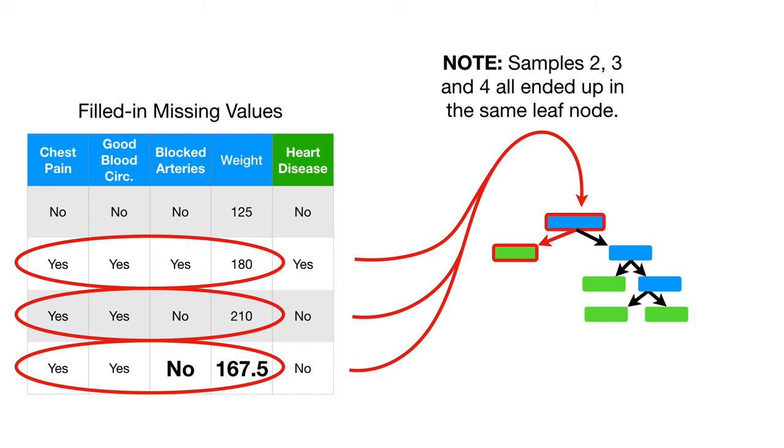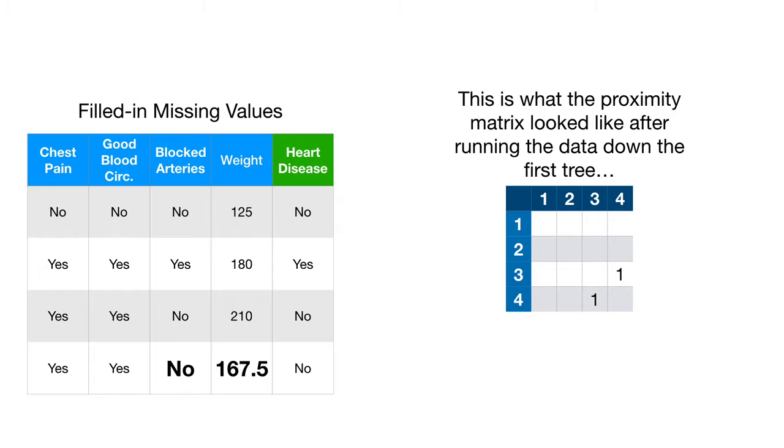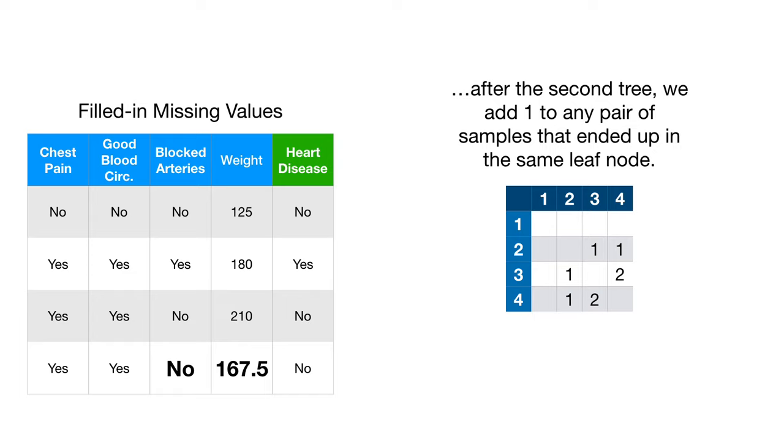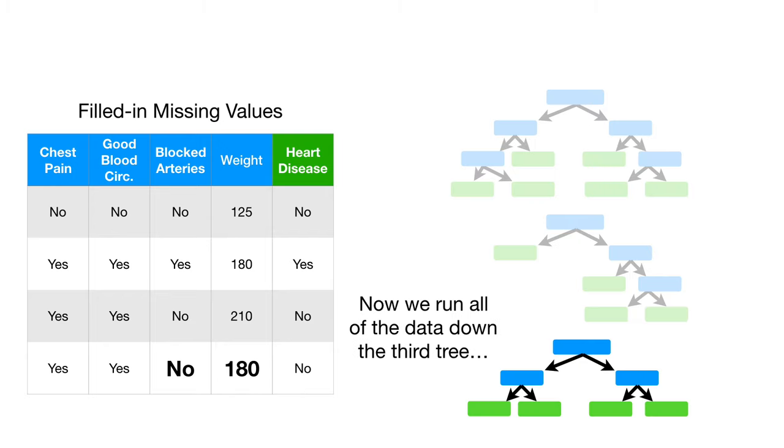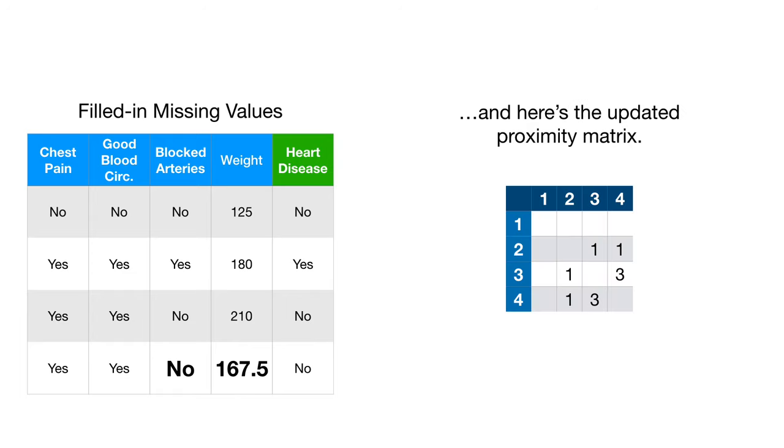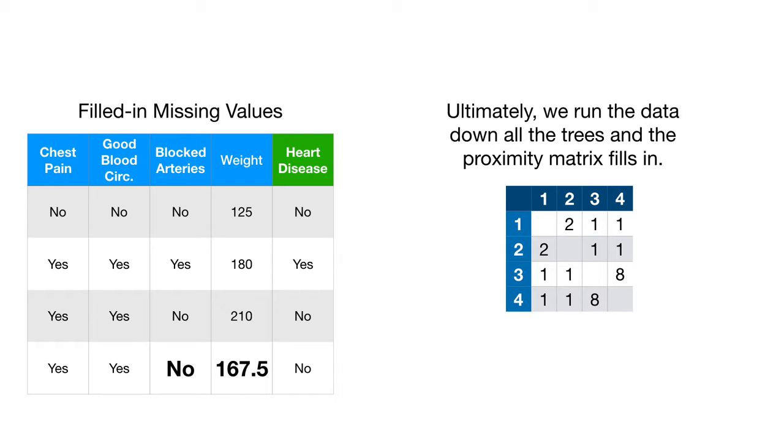Now we run all of the data down the second tree. Note, samples two, three, and four all ended up in the same leaf node. This is what the proximity matrix looked like after running the data down the first tree. And after the second tree, we add one to any pair of samples that ended up in the same leaf node. Samples three and four ended up in the same node together again. And sample two also ended up in that same node. Now we run all of the data down the third tree. And here's the updated proximity matrix. Only samples three and four ended up in the same leaf node.